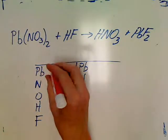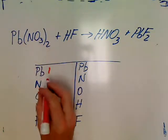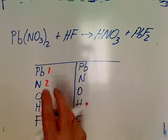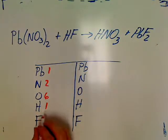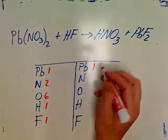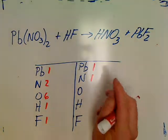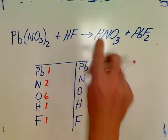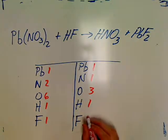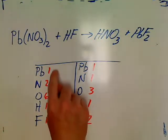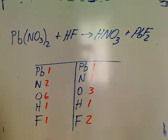I've got one Pb, I've got two N's, I've got six O's, I've got one H, and one F. Let's go to the other side. One Pb, one N, three O's, one H, and two F's. Well, here we go. I've got Pb balanced and H balanced, and then I've got the others unbalanced.